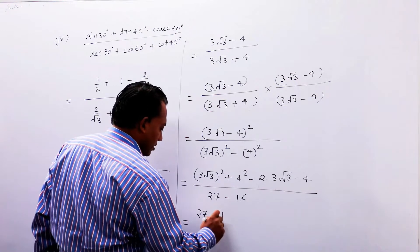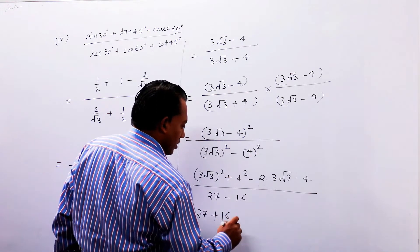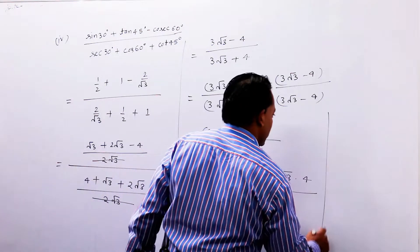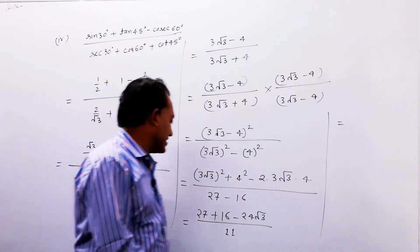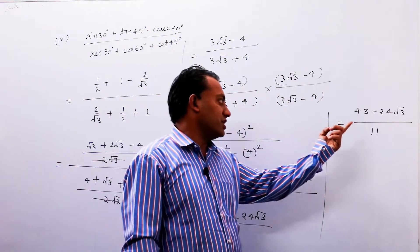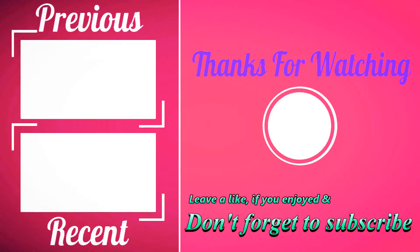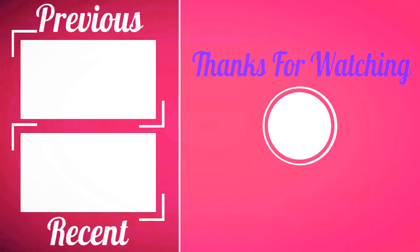ऊपर: 27 + 16 minus 24√3। 2, 3 और 4 को multiply करें तो 24 आएगा। नीचे: 27 minus 16 = 11। इसे add करेंगे और simplify करेंगे तो answer आएगा: 43 minus 24√3 upon 11। यही आपका final answer है।